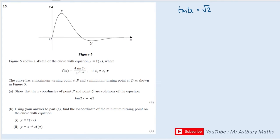So in order to solve this equation, I would take the inverse of tan of both sides to get this, and that tells me that 2x is equal to, when I put that into my calculator, I get 0.955.